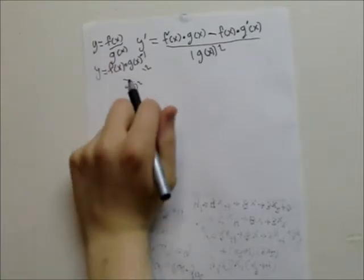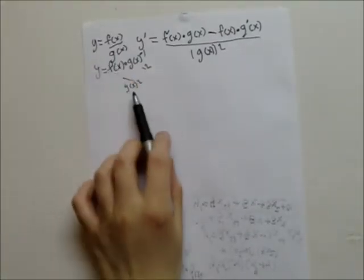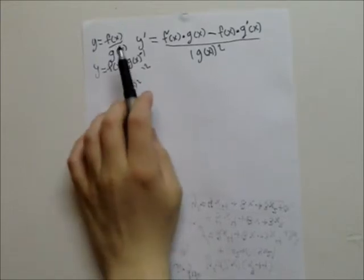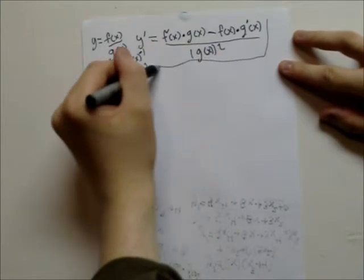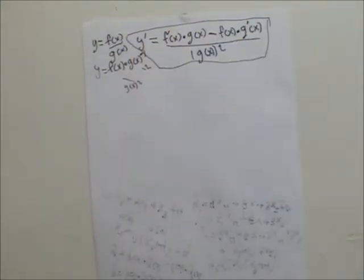So, basically, that's how the product rule can be applied to the quotient rule. But anyways, the quotient rule is this. I'll do an example of it for you guys in a bit.